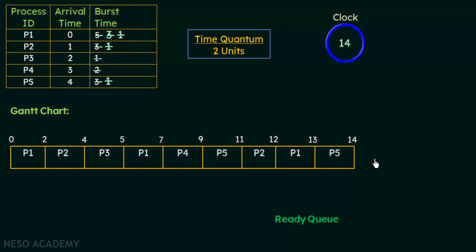This is how you form the Gantt chart for a set of processes following round robin scheduling when arrival times are given. When arrival times differ, you need to keep all these things in mind. If you can form the Gantt chart correctly, the rest becomes easy. In the next part we will calculate the average waiting time and average turnaround time for the same set of processes.